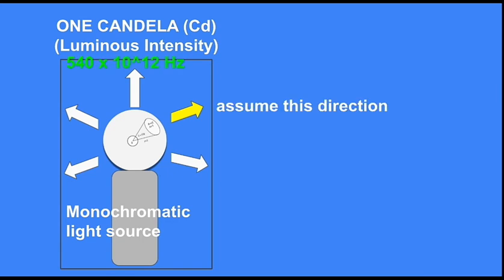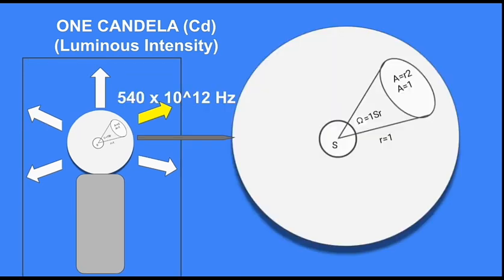540 × 10^12 Hertz in a certain direction, and this light has radiant intensity or radiant power